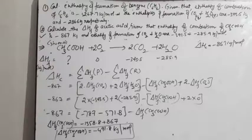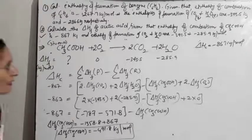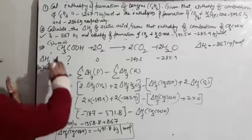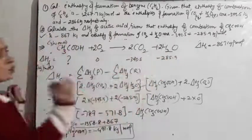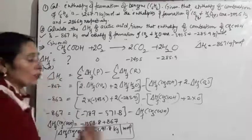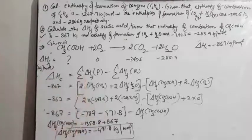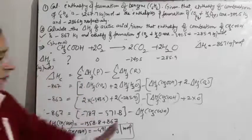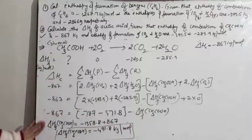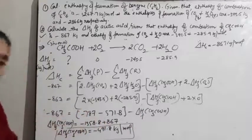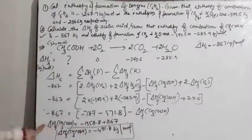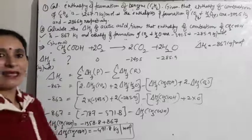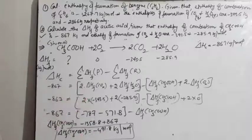So in this way, whatever unknown entity is in the equation, you can calculate it by rearranging. The minus term moved to the other side becomes plus. These are just like simple 6th–7th standard algebraic rearrangements.